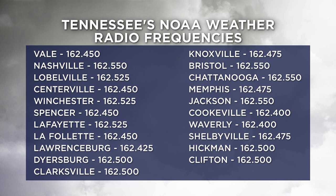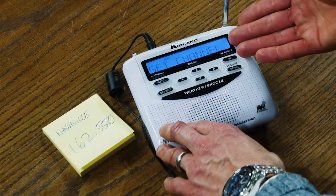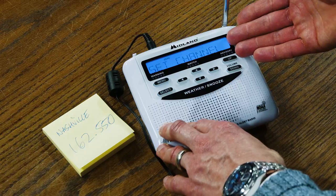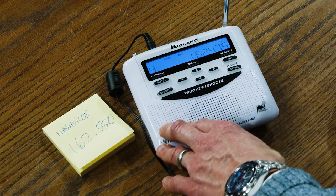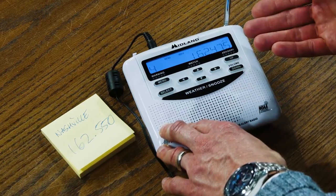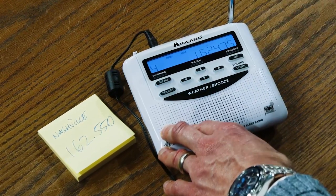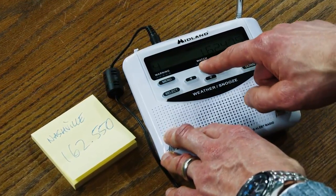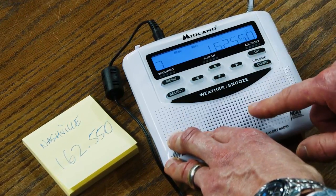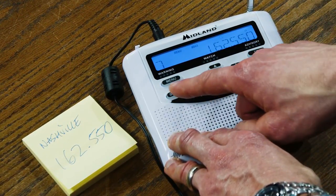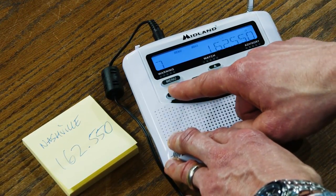Feel free to pause the video if you need to. Now, while set channel is displayed, hit select. Use the up and down arrows to cycle through the various frequencies until the one you noted is displayed. For Nashville, that is 162.550 — now hit select.